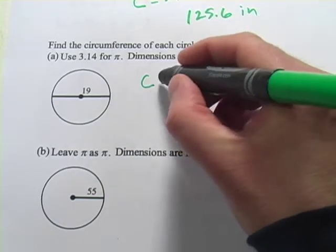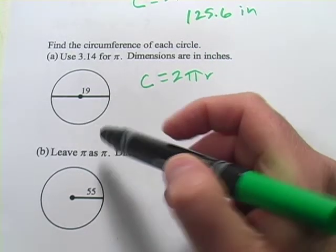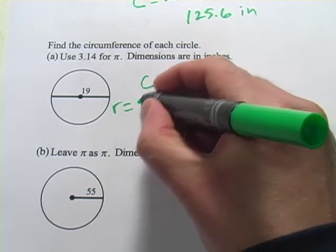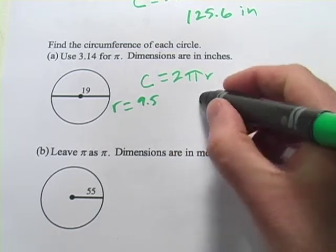And remember, our formula says circumference equals 2πr. So one thing you could do is just divide this in 2. So the radius would be 19 divided by 2, and if you plug that in your calculator, you'll get 9.5. Now you could take that and go ahead and plug it in here. So let's do that.